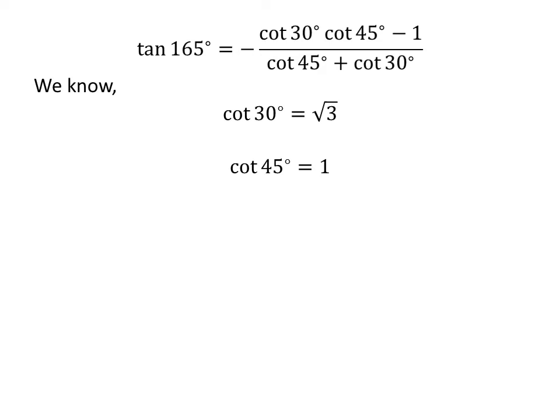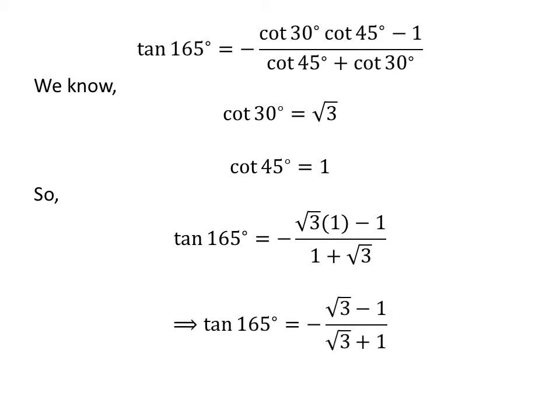So we plug in these values in the above expression. We get tangent of 165 degrees is equal to minus square root of 3 times 1 minus 1, upon 1 plus square root of 3, which simplifies to minus square root of 3 minus 1 upon square root of 3 plus 1.